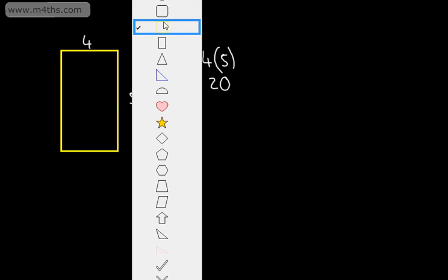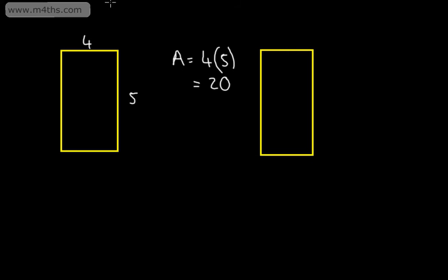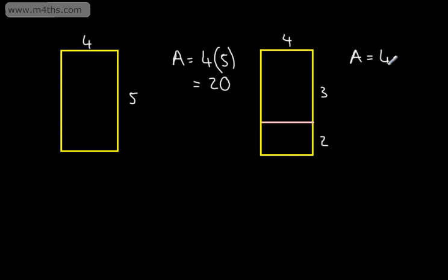What I'm now going to do is draw the rectangle again, but this time I'm going to split it up. So if I have my rectangle — it's an identical rectangle — and I split this up, I could put a line just here. So what I'm going to say now is that this length here again is going to be 4, but this one is going to be 3 and this one is going to be 2. 3 and 2 make 5 as before. So our area would be equal to 4 multiplied by the 3 plus 2.